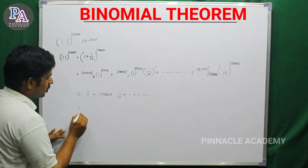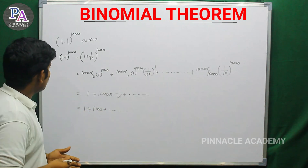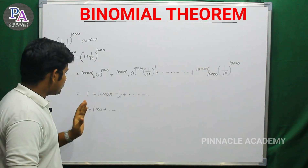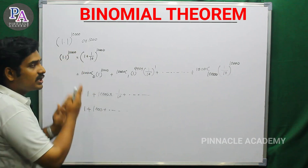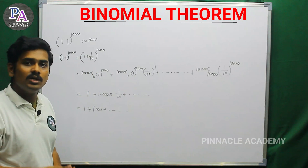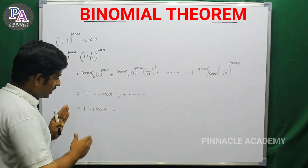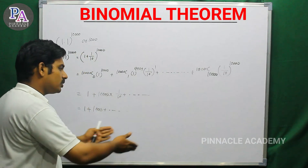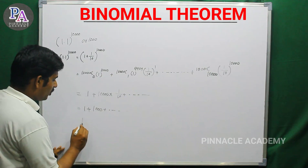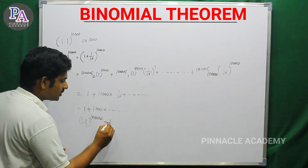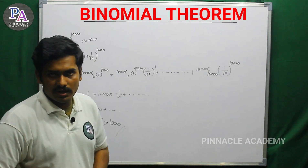We will be able to show that 1.1 the whole raise to 10,000 is greater than 1,000. By expanding and checking the terms, 1.1 raised to 10,000 will be greater than 1,000. That is how we prove this result using the binomial theorem.